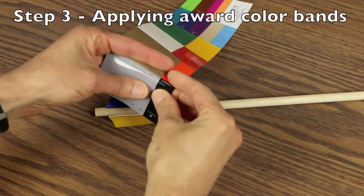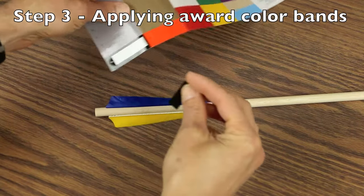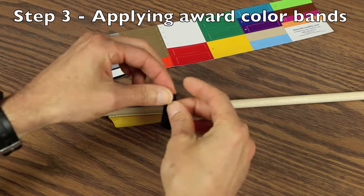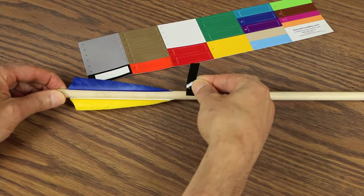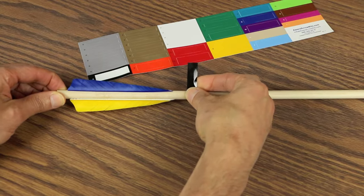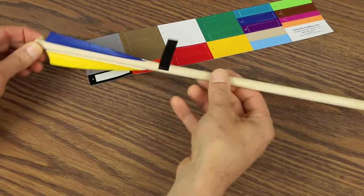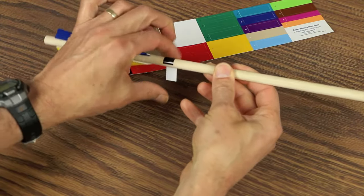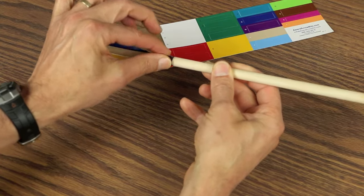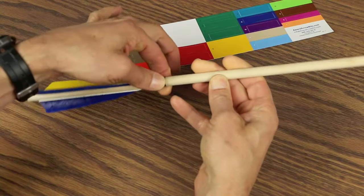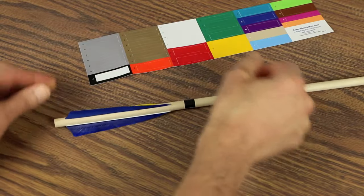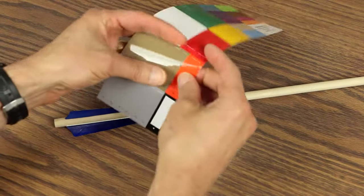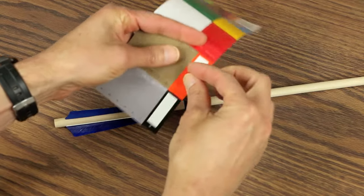Applying the color bands to the arrow is as simple as removing the desired color from the sheet and wrapping it around the shaft. Once one color is applied, move on to the next.